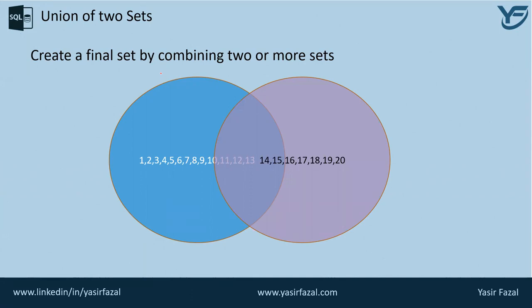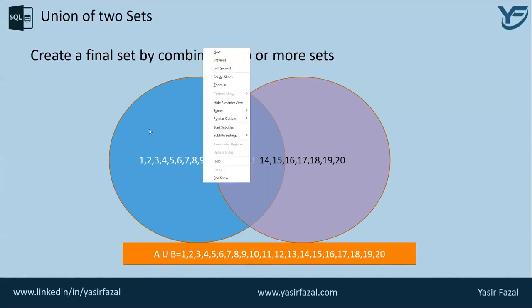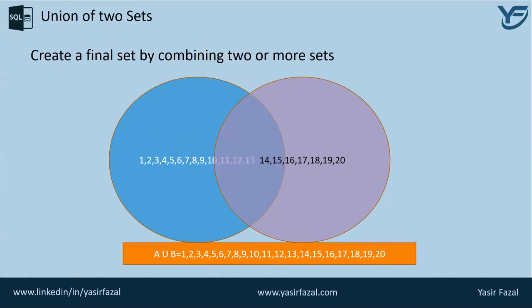This is called the union of a set, and the resultant set will be named as the union. So what shall we get? We shall get A union B, and all the numbers that are actually present. Here is set A and here is set B.